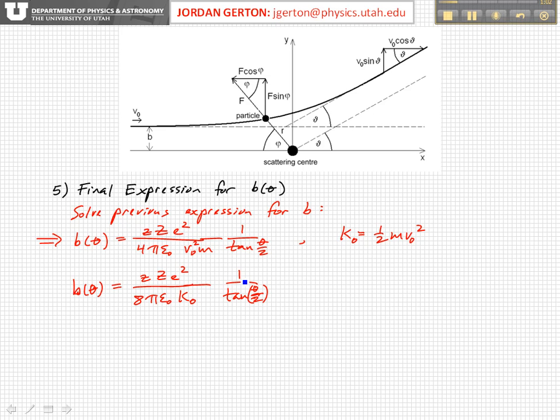And if we make the substitution, basically for the non-relativistic case, that the kinetic energy, the initial kinetic energy, is equal to 1 half M V naught squared, then we get this expression where now we have the kinetic energy at the bottom. So you see that this provides a nice simple relationship between B and theta.